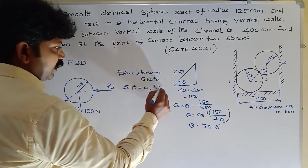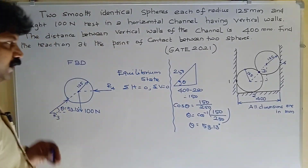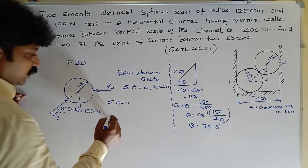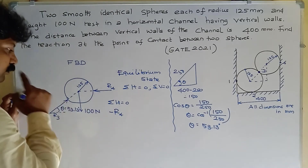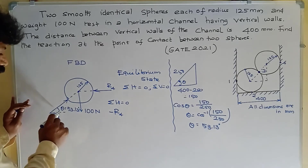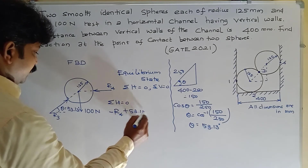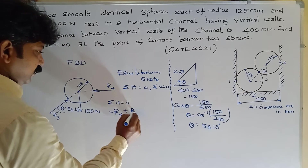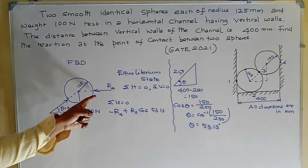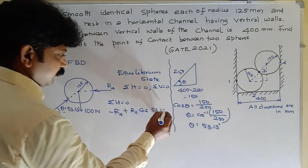At equilibrium state, sigma H = 0 and sigma V = 0. Applying sigma H = 0: R3 acts at angle 53.13 degrees with the horizontal. There are only two horizontal forces — R4 and the horizontal component of R3. So: minus R4 plus R3 cos 53.13 = 0.